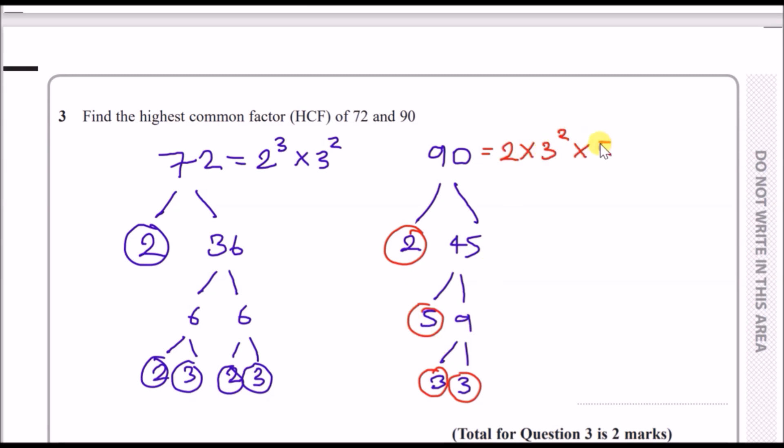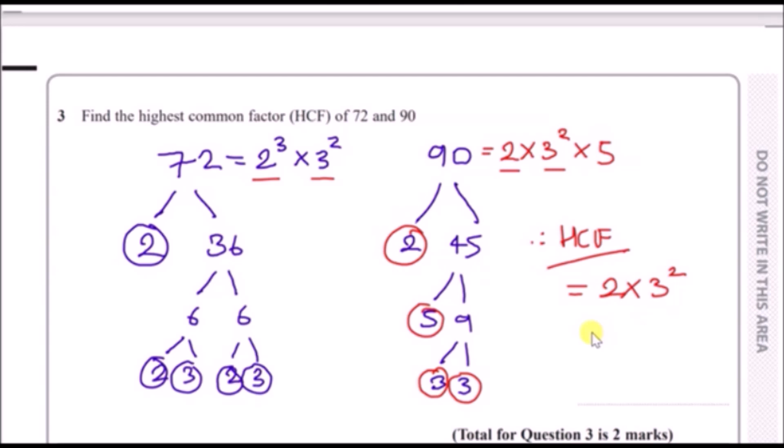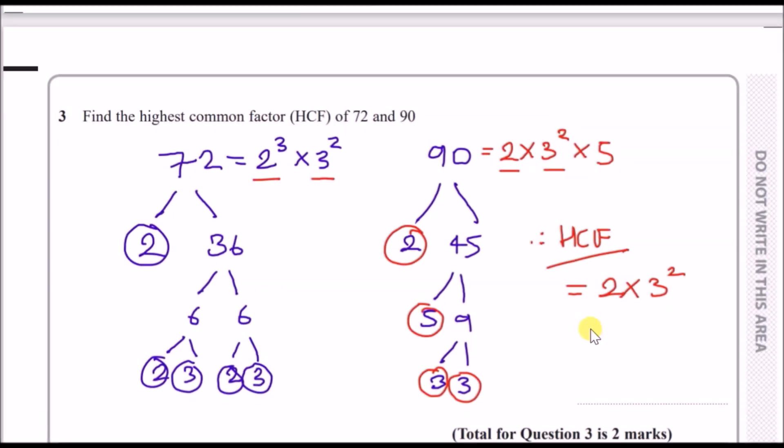For the highest common factor, all you have to do is ask yourself what powers do both of these numbers have in common. If you look at 2, they both have at least a single power of 2, so that means the HCF is 2. As for 3s, they both have at least two powers of 3, so 3². For 5, only a single one has 5 so it doesn't count. That means your result is just 2 × 3², which is 18.